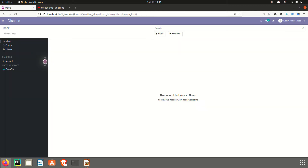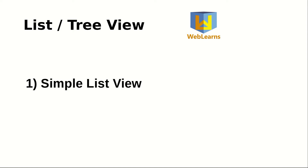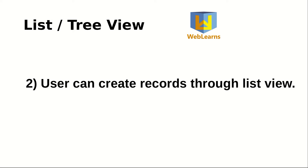Let's move to our main topic. First we'll see the overview of the list view, then we'll create one. If you want to see the list of records in a tabular format, it's called a list view. You can add a simple list view as shown in the screenshot, and users can also create records directly through the list view.